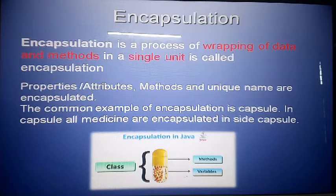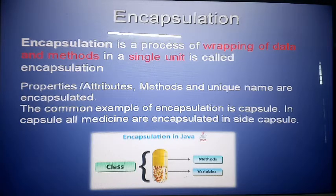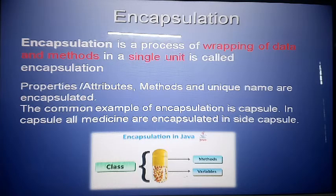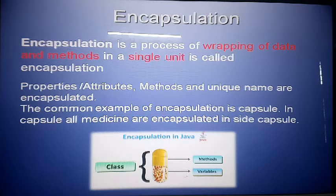The common example of encapsulation is a capsule. Inside a capsule, all the medicine is encapsulated. So the capsule is like a class, and inside it there are two bodies — one is a method and one is a variable. The medicine is inside, then covered, and you can save the capsule and use it for a long time.